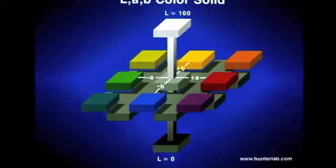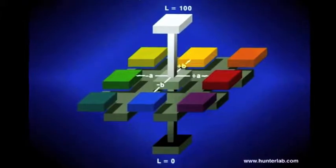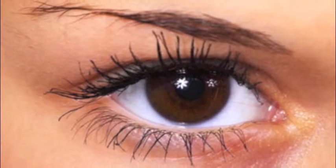The LAB scale is the most commonly used color scale. Essentially, the LAB scale is created to reproduce how our eyes and brain communicate color.